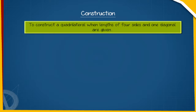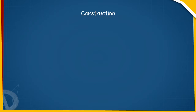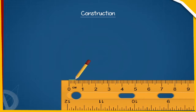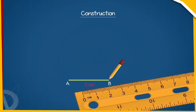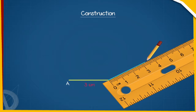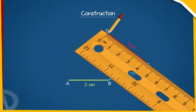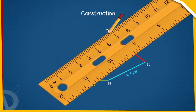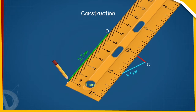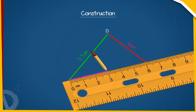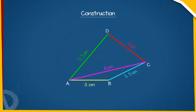Let us construct a quadrilateral ABCD in which AB equals 3 cm, BC equals 3.5 cm, CD equals 4 cm, DA equals 5.5 cm, and the diagonal AC equals 6 cm. A rough sketch will help us in visualizing the quadrilateral.